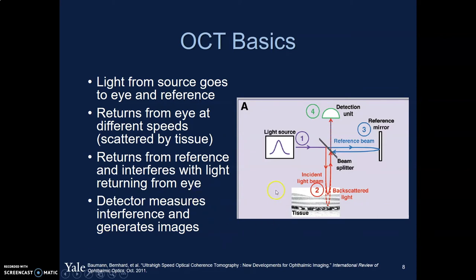So if a patient has a very dense cataract or a dense vitreous hemorrhage, we won't be able to obtain very good images. The light is generated from a light source, shot over to a splitter, which sends some light over to the tissue where it scatters and slows down through different layers. That light comes back through the detection unit. At the beam splitter level, some light is also sent to a reference arm providing a comparison, and the detection unit uses the interferences and an algorithm to generate images for us to see.